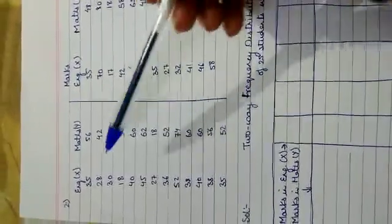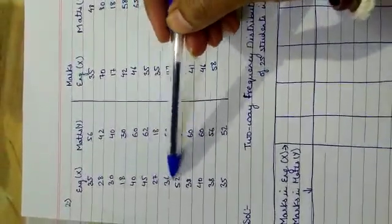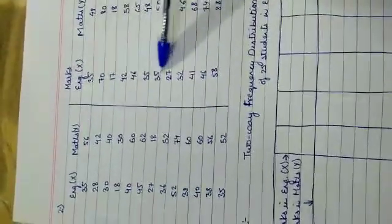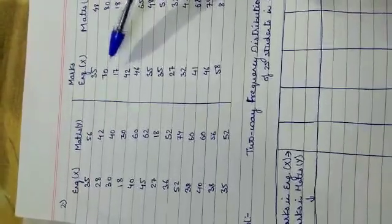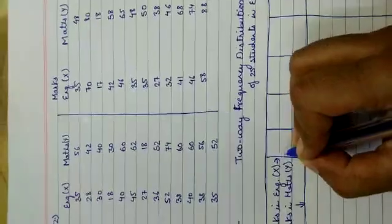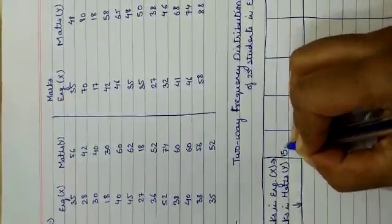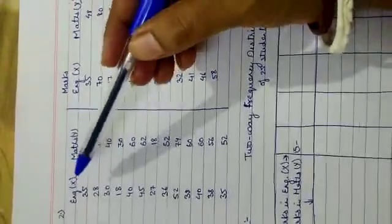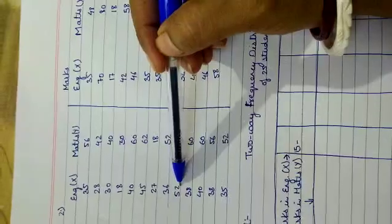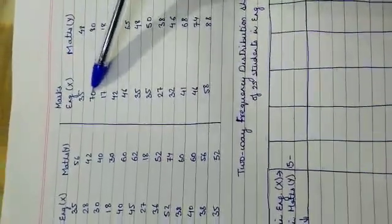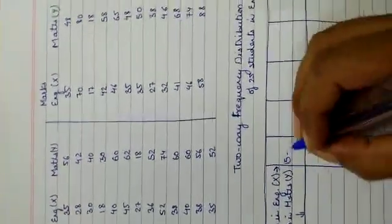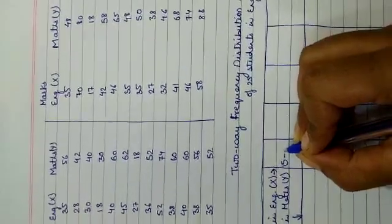Let's start with the X variable. The smallest number in X is 17 or 18, so I can start with 15 for the class interval. The highest number in X is 70, so I can go till 75. I am taking a class interval gap of 10.